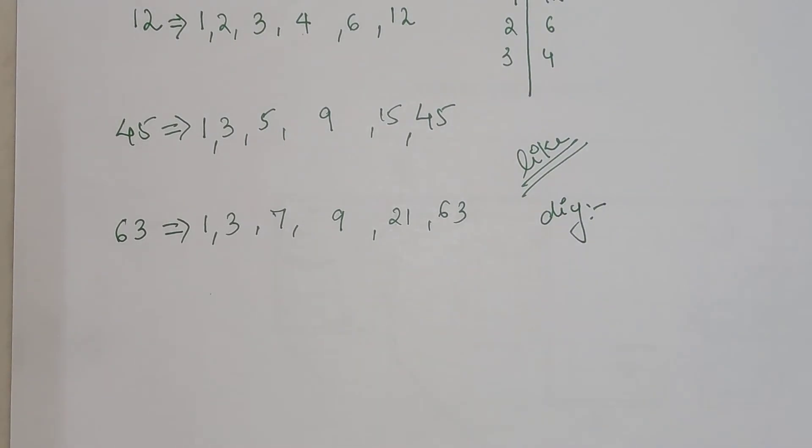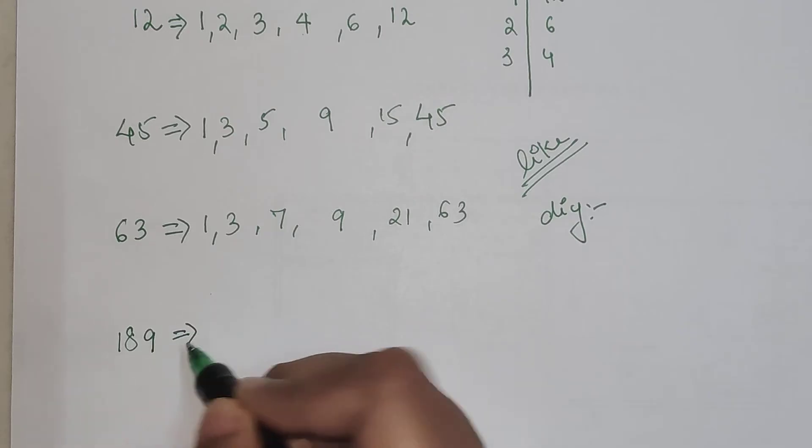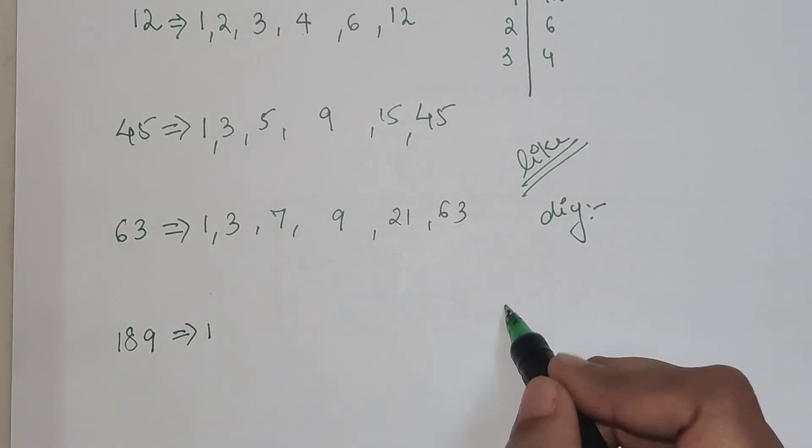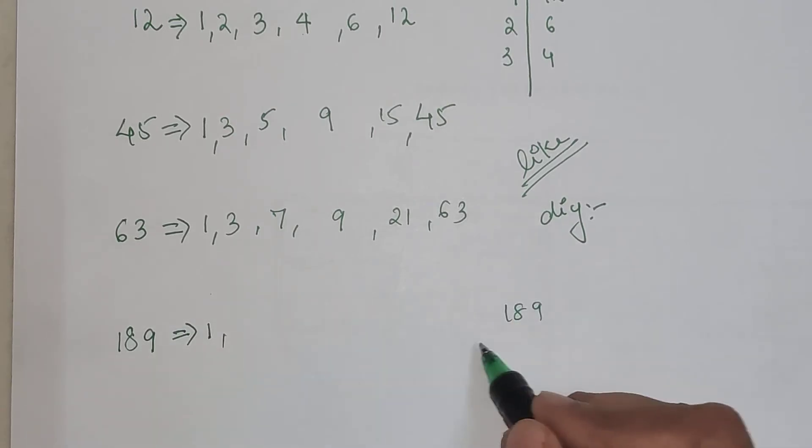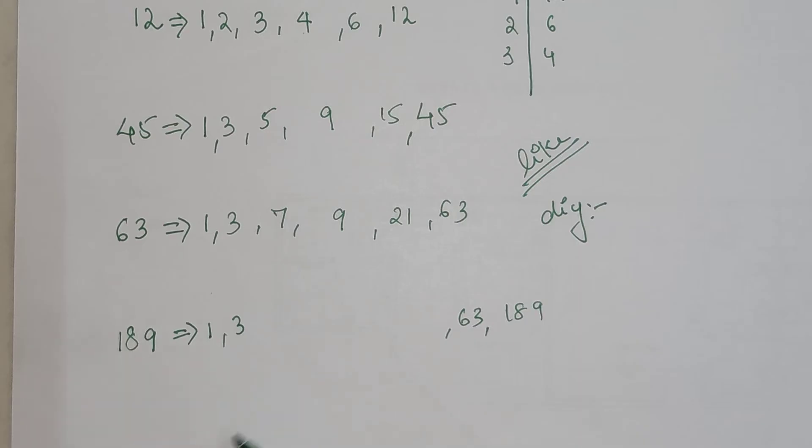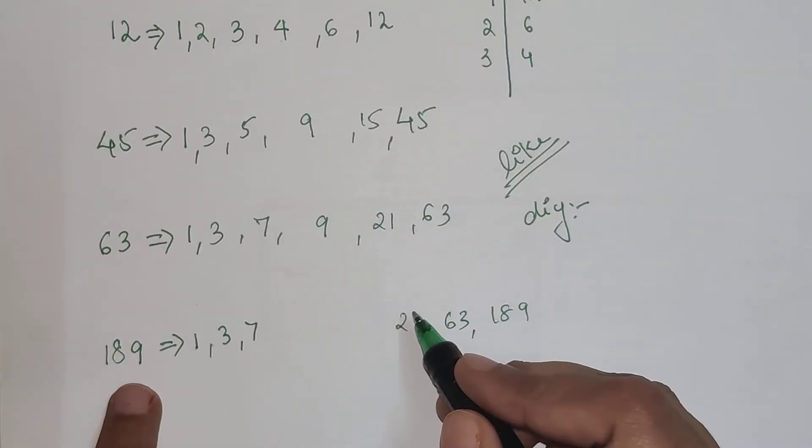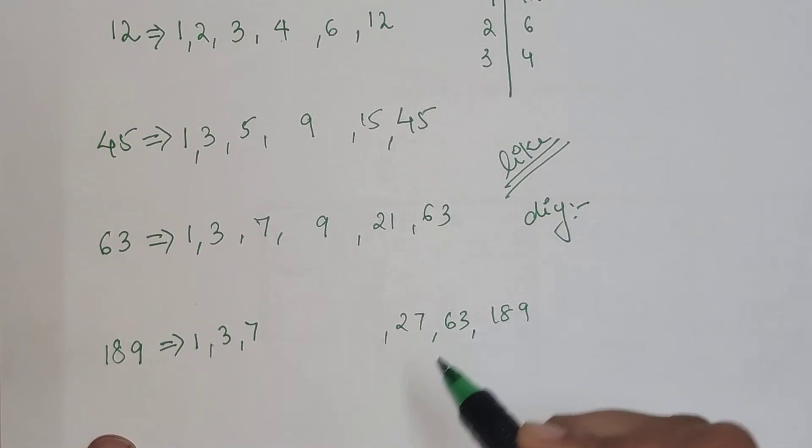Now let's look at a bigger number. We have 189. This is 1 and 189. Then this will be 3 and 63. Then 4 not possible, 5 not possible, 6 not possible. 7 yes, 7 is possible, so we have 27.